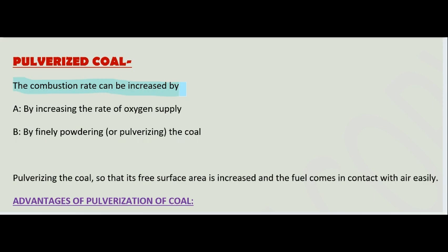To improve combustion, first of all, we need to increase the supply of oxygen, which will increase the combustion rate. The second method is to pulverize the coal. Pulverization means that we convert the fuel into a powder form.